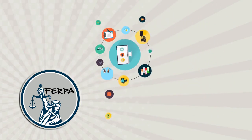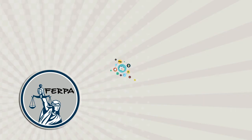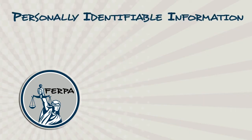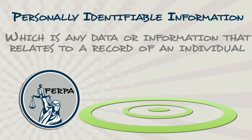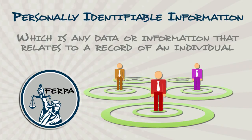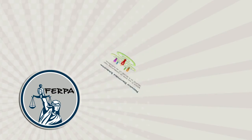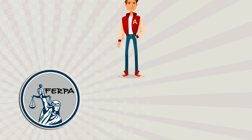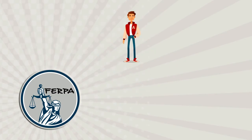Educational records also include records that contain any personally identifiable information, which is any data or information that relates to a record of an individual. Personally identifiable information includes but is not limited to the student's name.